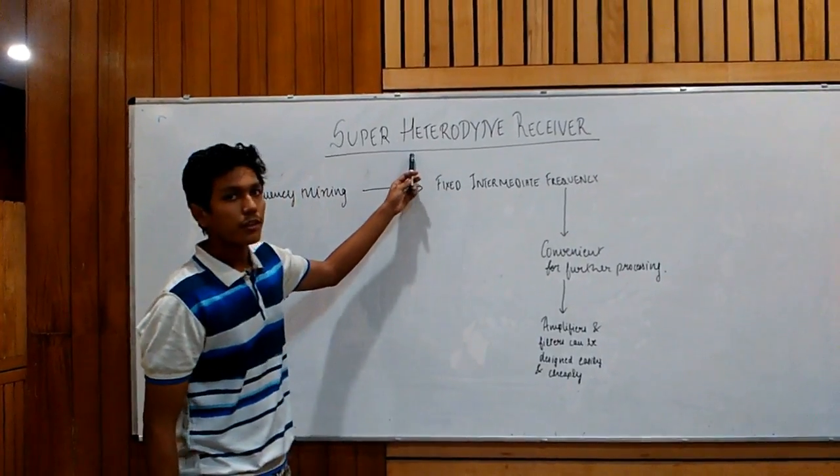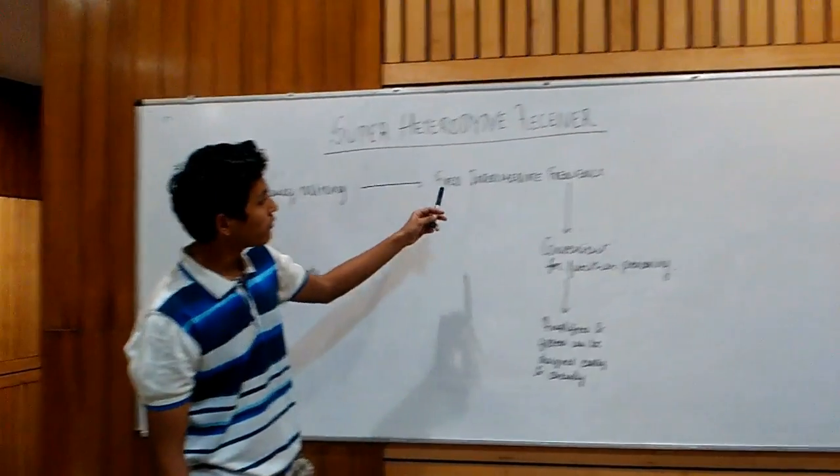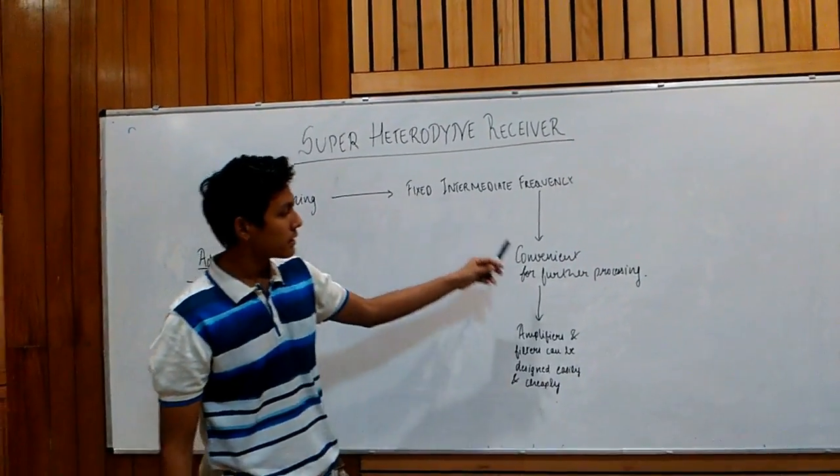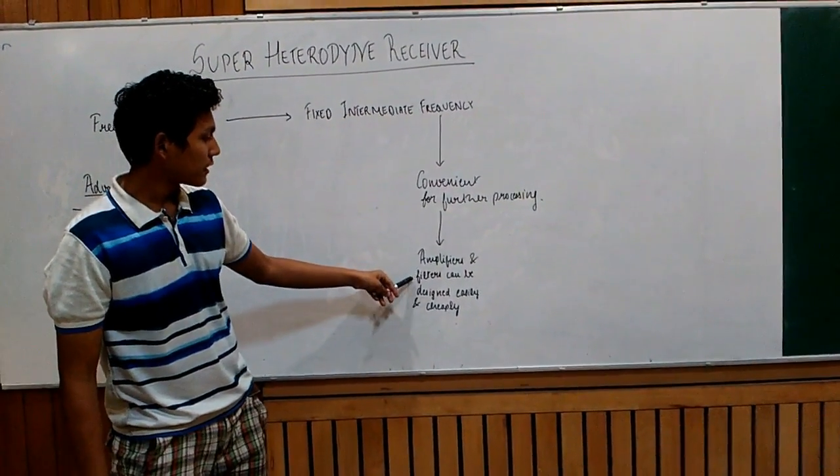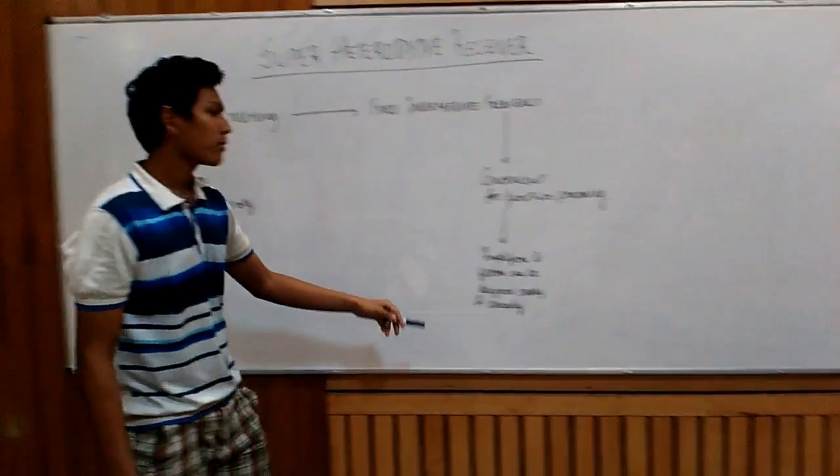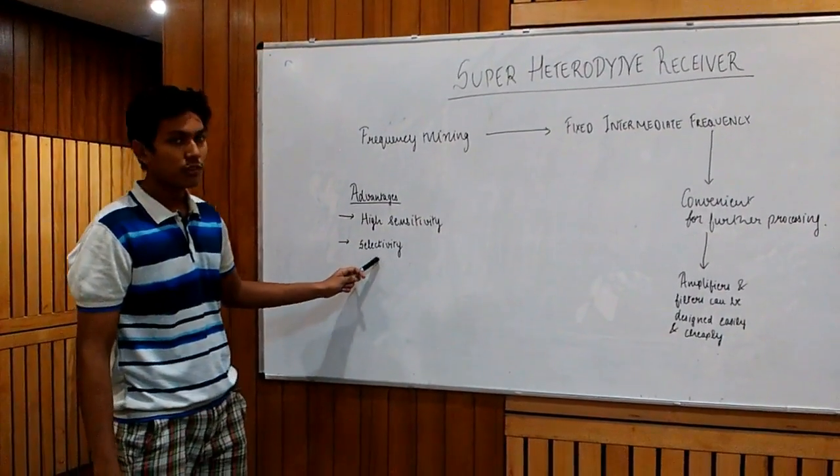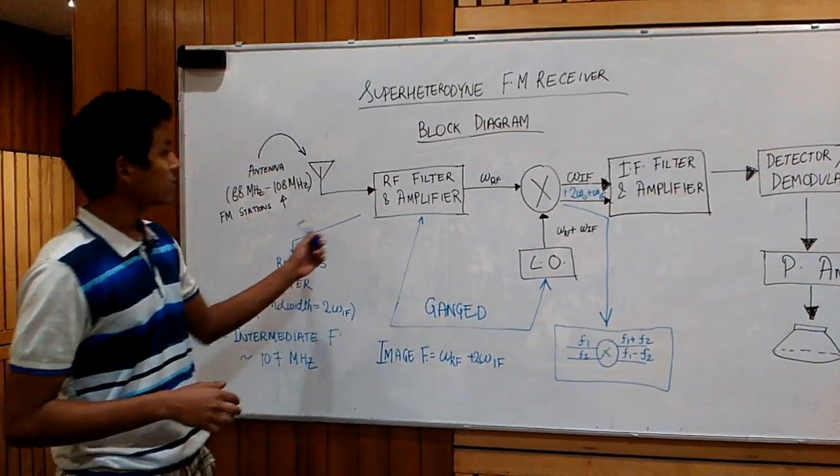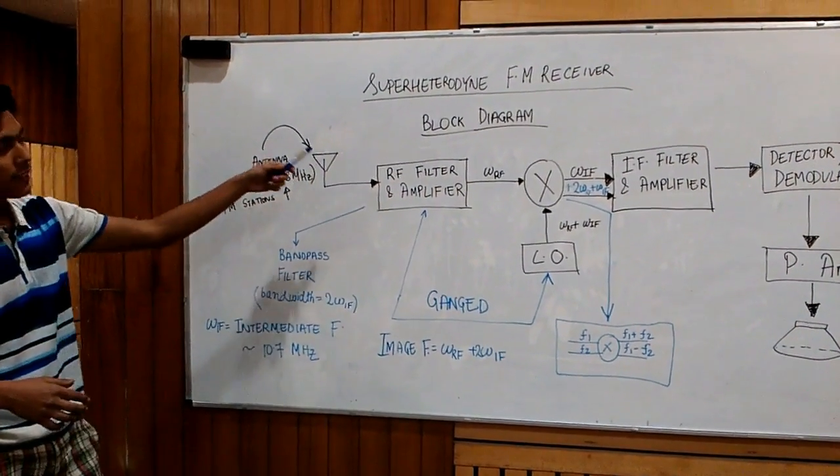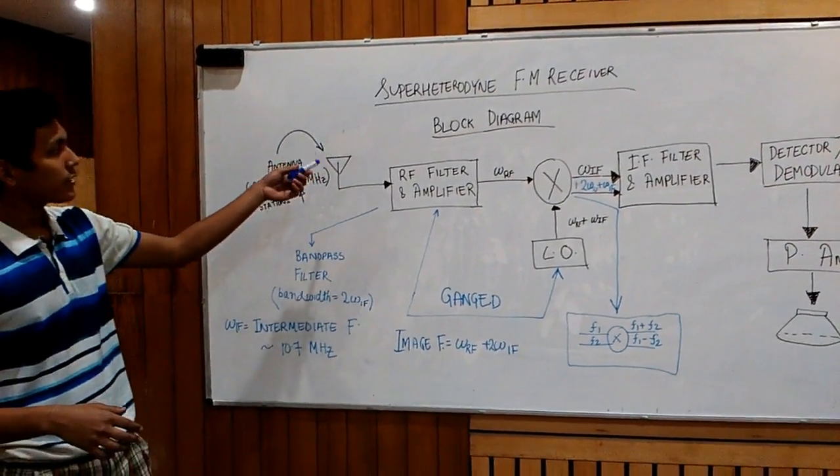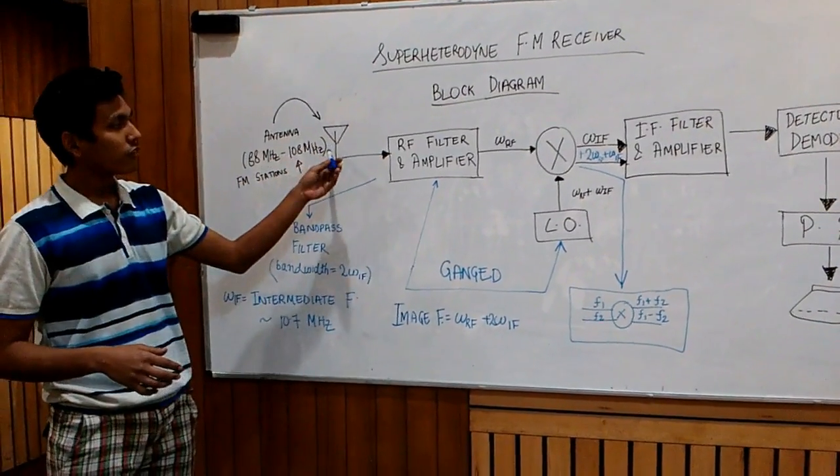The second thing we are about to study today is the superheterodyne receiver. This receiver uses frequency mixing to convert a received signal into a fixed intermediate frequency, which is convenient for further processing. The fixed frequency can be used to design amplifiers and filters very easily and cheaply. The advantages it also provides are the high sensitivity and selectivity to frequency. So this is a block diagram of a superheterodyne FM receiver. This is an antenna. Antenna is the first transducer forced into action. It intercepts the signals which are from the atmosphere and converts them into a voltage of the order of microvolts.